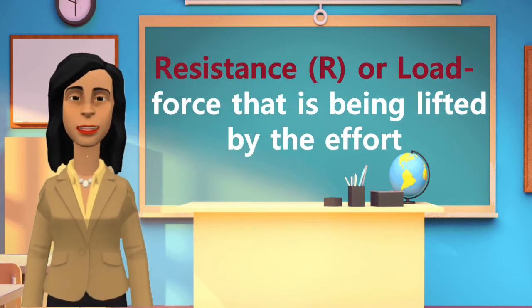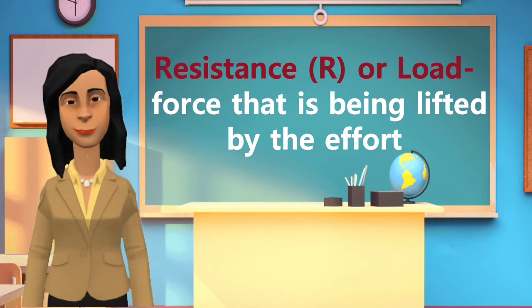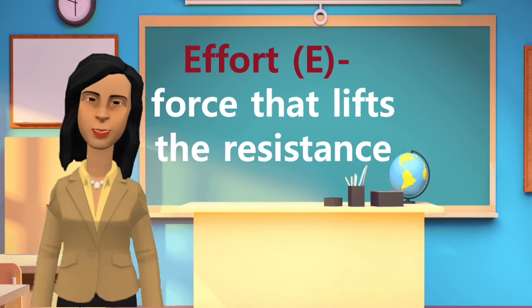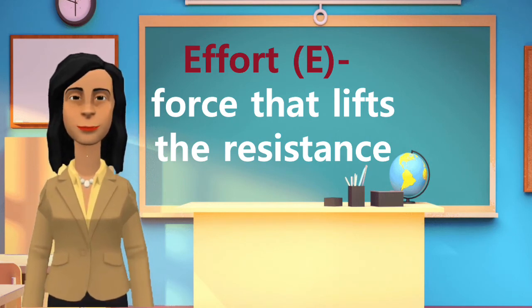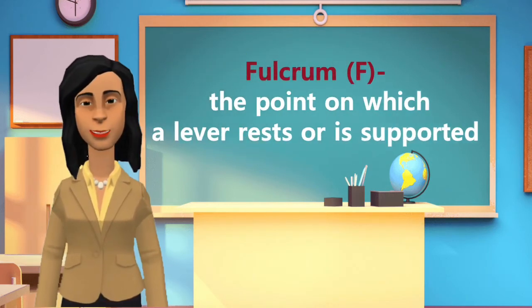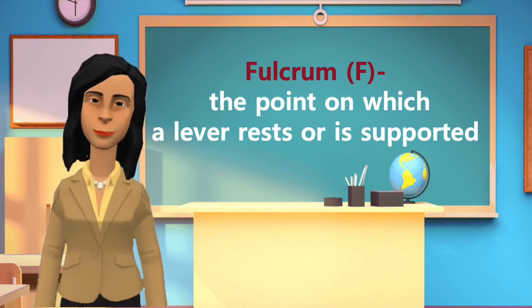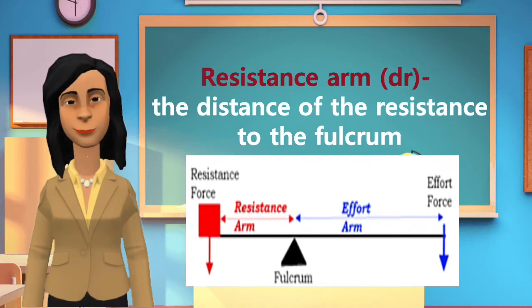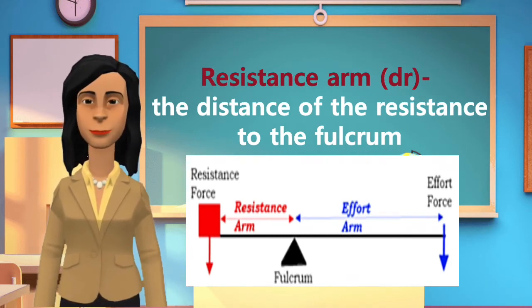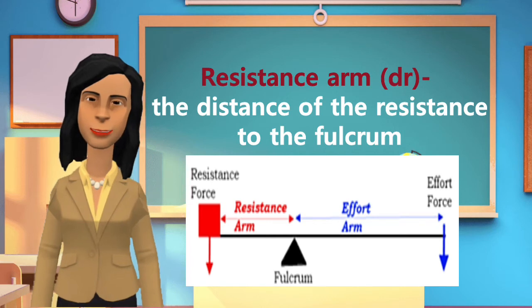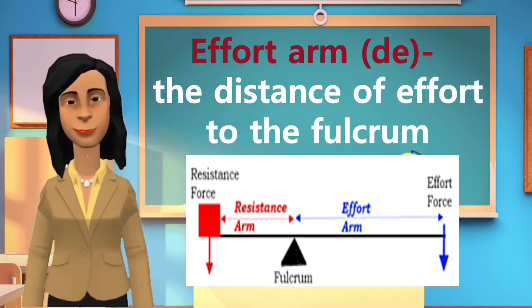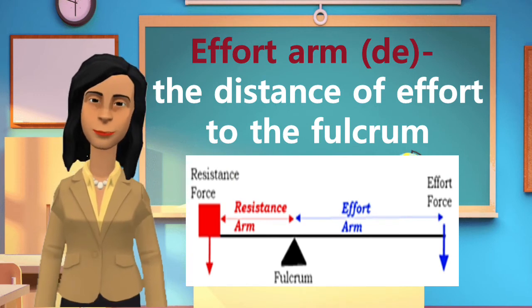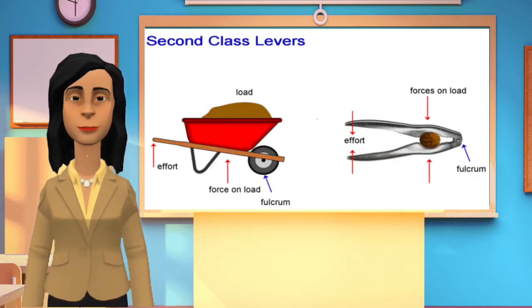Resistance (R) or load: a force that is being lifted by the effort. Effort (E): a force that lifts the resistance. Fulcrum (F): the point on which a lever rests or is supported. Resistance arm (DR): the distance of the resistance to the fulcrum. Effort arm (DE): the distance of effort to the fulcrum. These are examples of classes of levers.